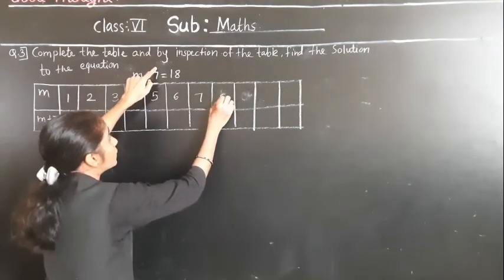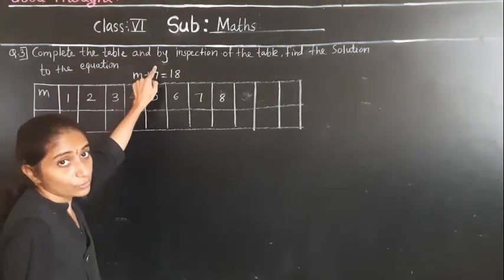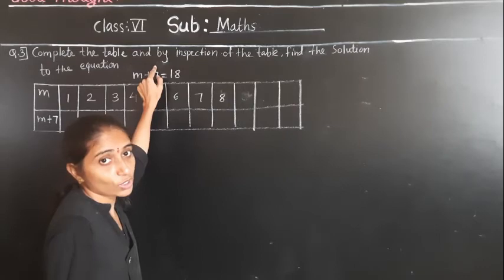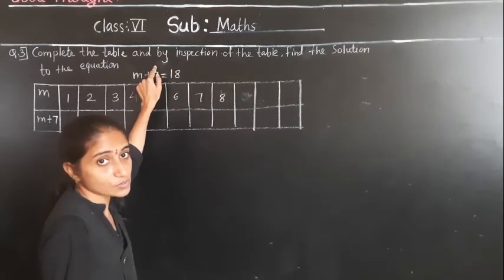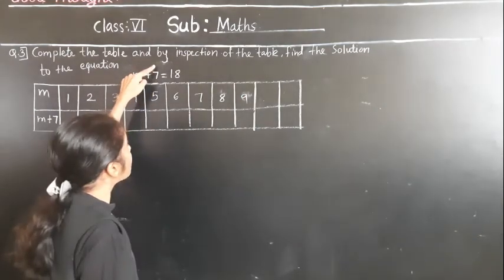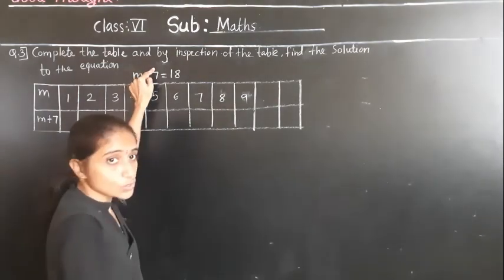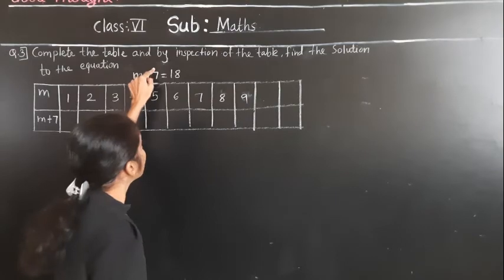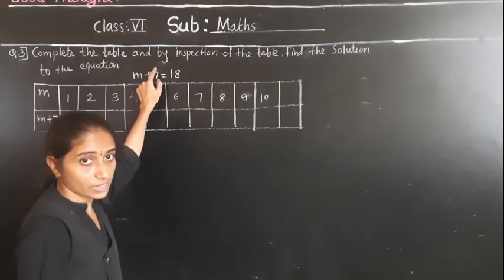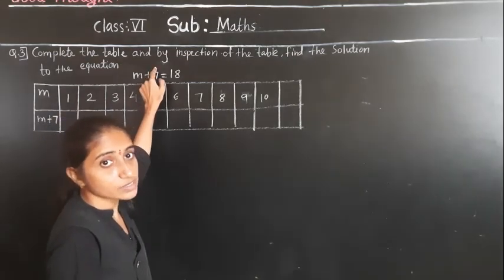Check with 8: 8 plus 7 is 15, not equal to 18. 15 is not equal to 18, so left hand side is not equal to right hand side. Take 9: 9 plus 7 is 16, so 9 is not the solution. Then take 10: 10 plus 7 is 17, not 18.